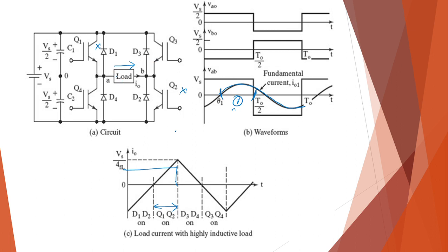Although you have turned on Q3 and Q4, they will not be active because the current will try to flow in the upward direction. Since Q2 has been turned off and D2 is reverse biased, the only option for the current is to go upwards. Q3, although on, only allows current to flow downward, so your current will start to flow through D3, give energy back to the voltage supply, and then flow through D4. That is why during this mode, D3 and D4 are on.